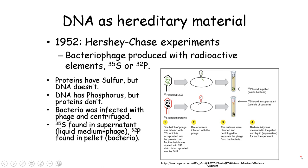In 1952, Hershey and Chase performed a more conclusive experiment that showed DNA and not protein is indeed the hereditary material. At that point, it was known that bacteriophages would inject their genetic material into bacteria. Hershey and Chase wanted to know if this genetic material was protein or DNA. They made use of the fact that phosphorus is present in DNA and not in proteins, and sulfur is present in proteins and not in DNA.